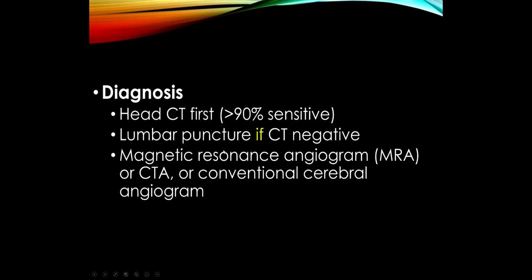If we're worried about subarachnoid hemorrhage, the first study is always a head CT — anytime there's concern about acute hemorrhage, do a CT. CT is more than 90-95% sensitive. Usually we do not need a lumbar puncture, but if you strongly suspect subarachnoid hemorrhage and the CT is normal, then do a lumbar puncture to look for red blood cells. Once subarachnoid hemorrhage is diagnosed, we need to find the aneurysm with an angiogram study — MR angiogram, CT angiogram, or conventional angiogram.